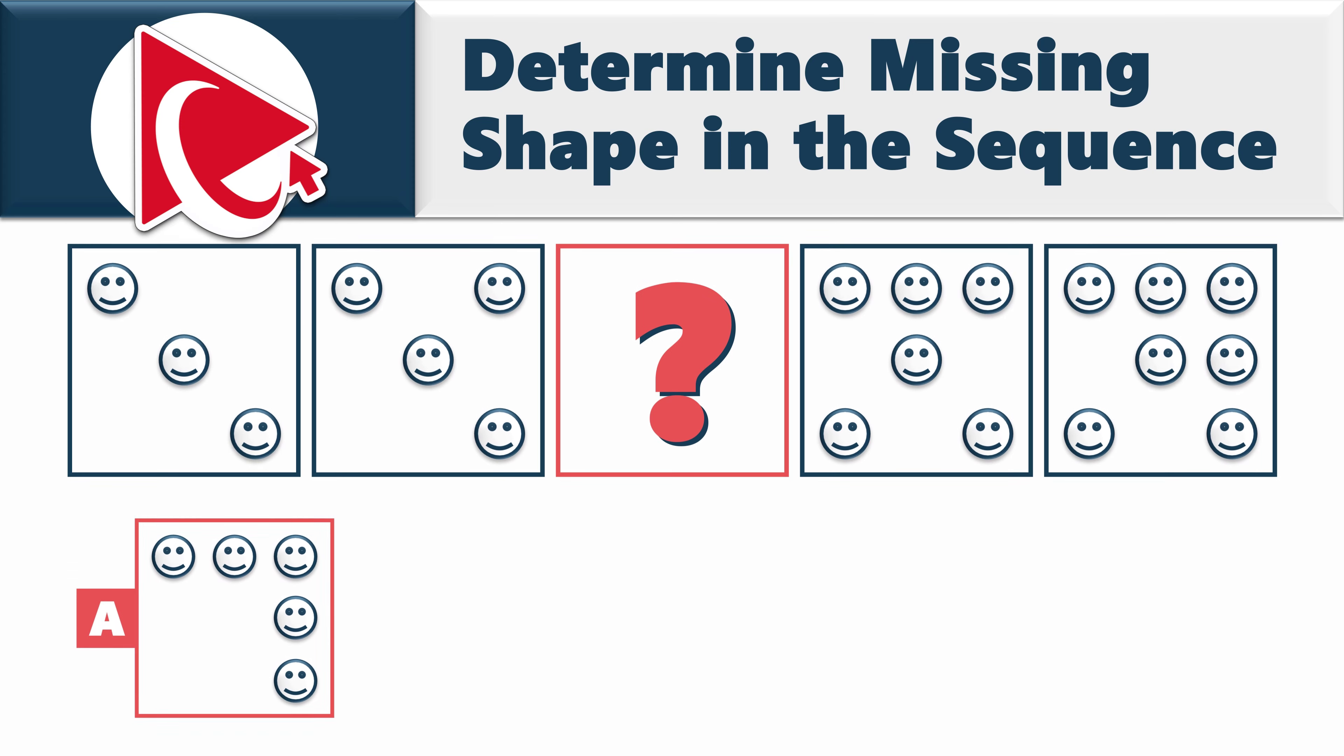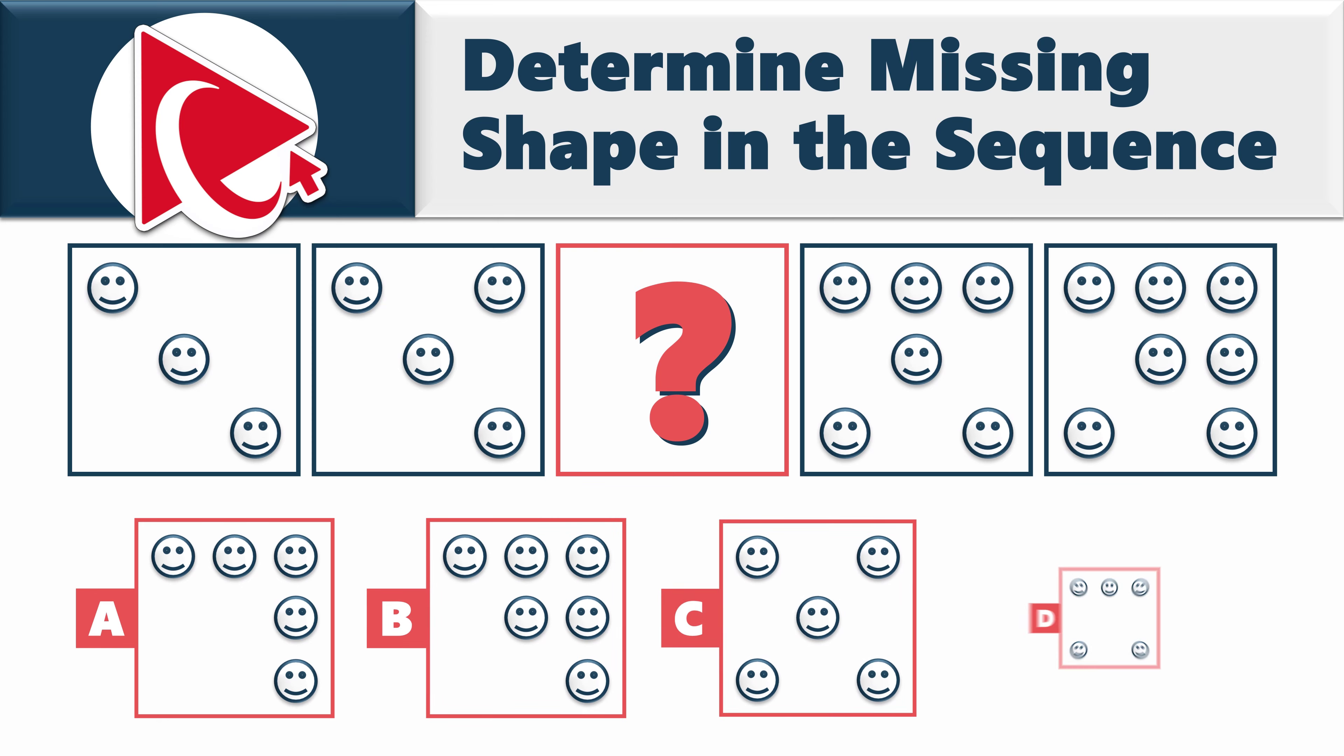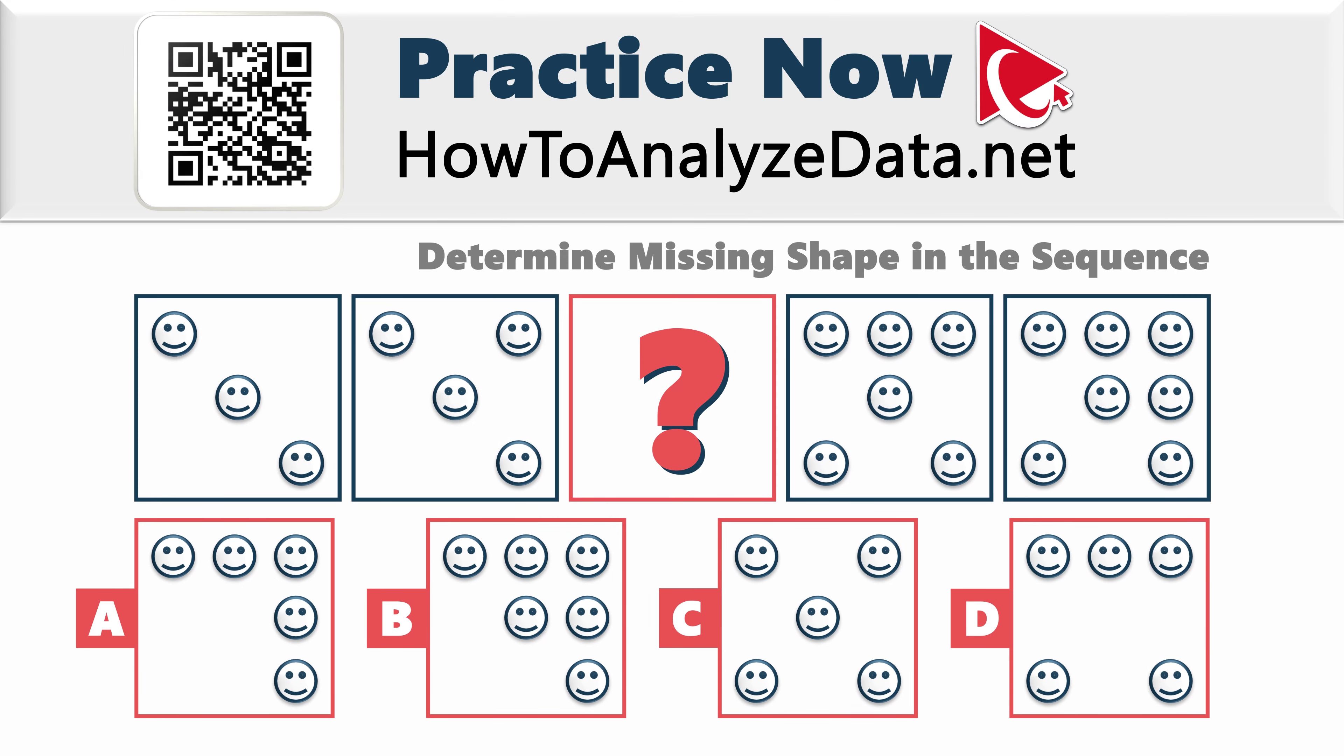Each square has smiley faces inside. There are five squares and the middle square is missing. You need to select the answer for the missing square out of four possible choices: choice A, B, C, and D. You might be thinking, and I totally agree with you, that this is a tricky question.